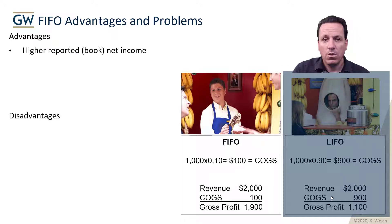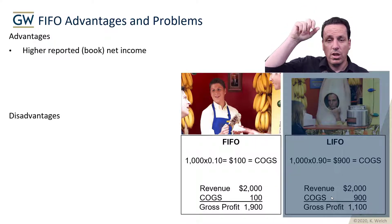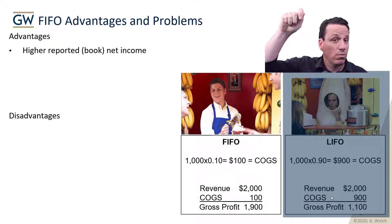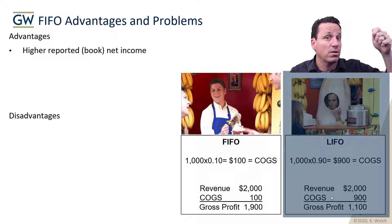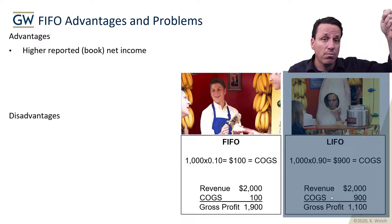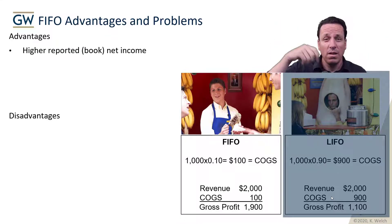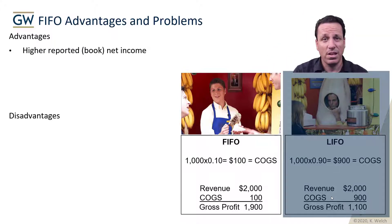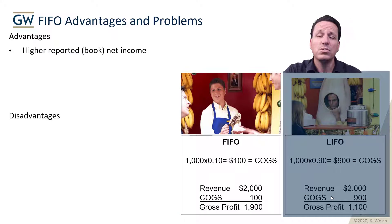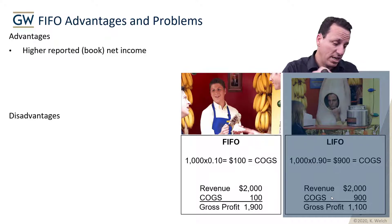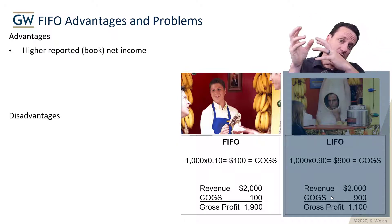It's important to realize this switches — if you have a period of declining prices, your book net income could be higher under LIFO. But assuming inflation and increasing prices, you're going to have higher book net income using FIFO, because you're taking the oldest items in your inventory and always cycling those out. As you add to the inventory, the newer items are priced more, whereas LIFO takes those new ones and accounts for them first.